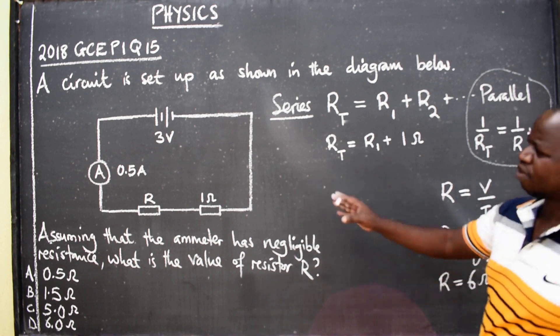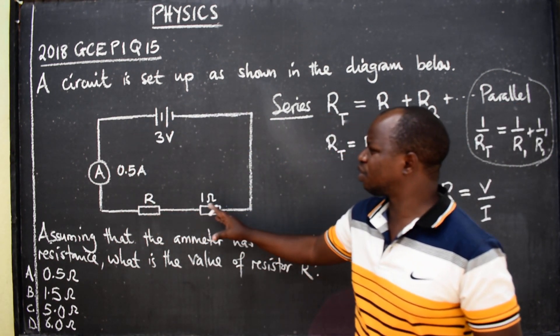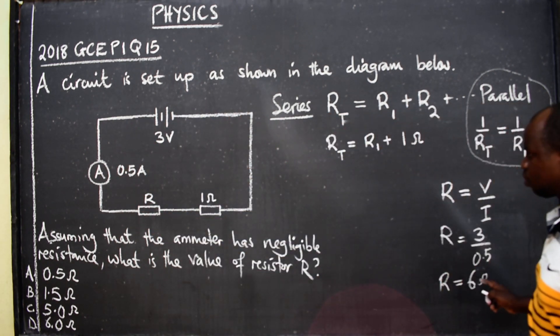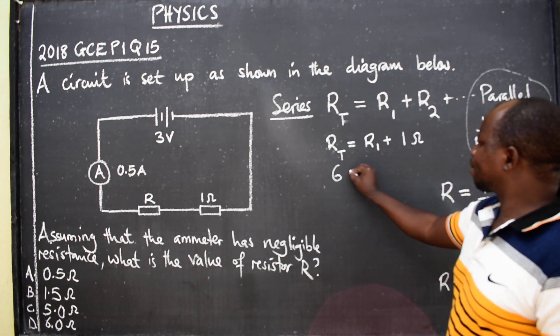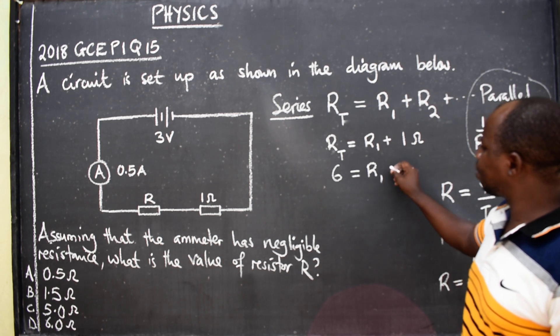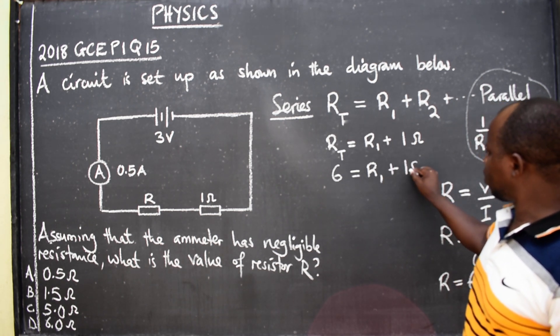So the total for this circuit here, total resistance for this circuit is 6 Ohms. Meaning here, it will be 6 is equal to resistor 1 plus 1 Ohm.